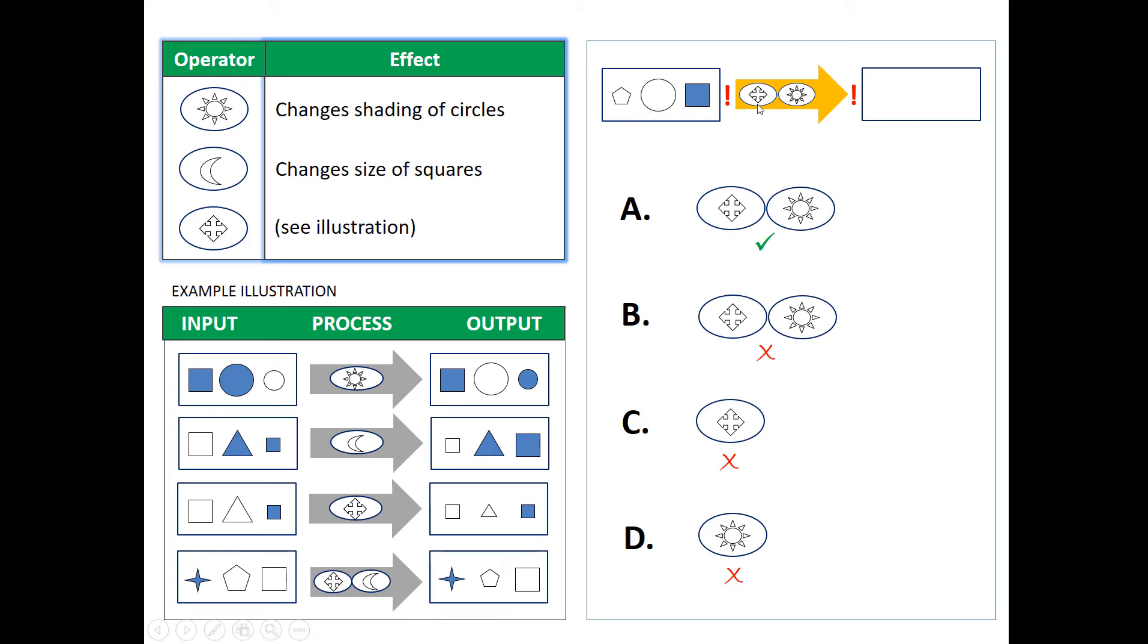So the quad arrow would make pentagon bigger and the circle smaller, while the shaded square would be left unchanged.